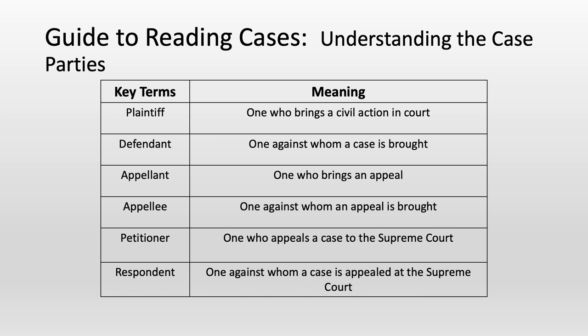The appellant is the person who brings an appeal. Let's say we go through the court hearing and the court rules for the plaintiff. The defendant can say they want to appeal this decision because they think the court missed an area of the law that is relevant. So the appeal goes up to the appellate court. The appellant is the one bringing the appeal — it could be the plaintiff or it could be the defendant. The appellee is the person against whom the appeal is brought.